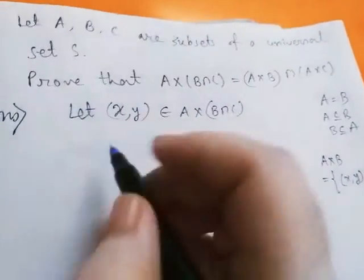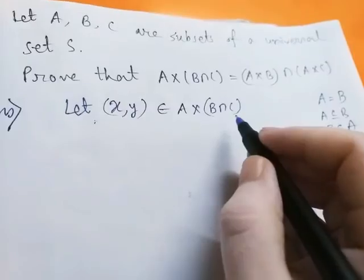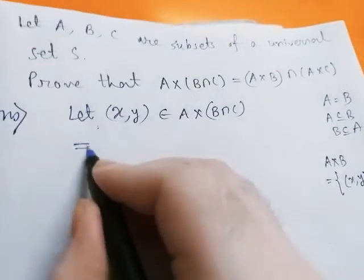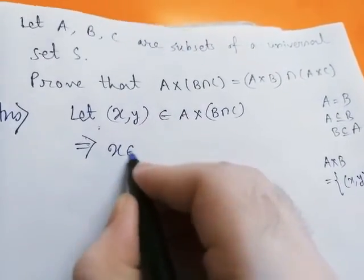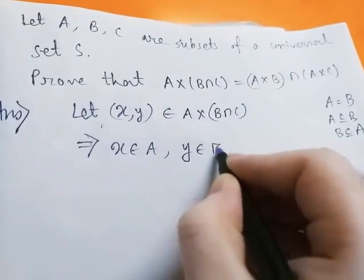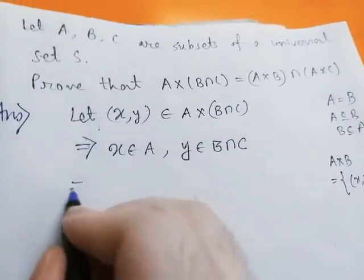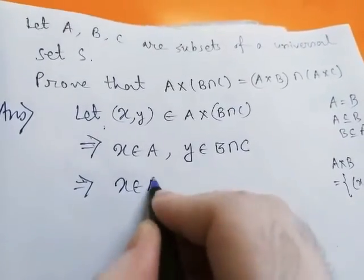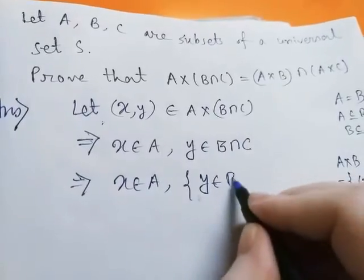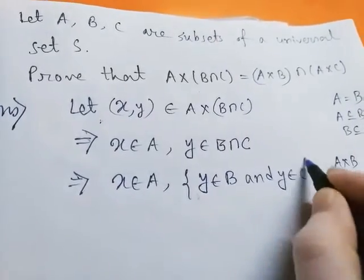Let (x, y) belong to A cross (B intersection C). This implies x belongs to A and y belongs to B intersection C, by definition of Cartesian product. This further implies x belongs to A, y belongs to B, and y belongs to C, by definition of intersection.